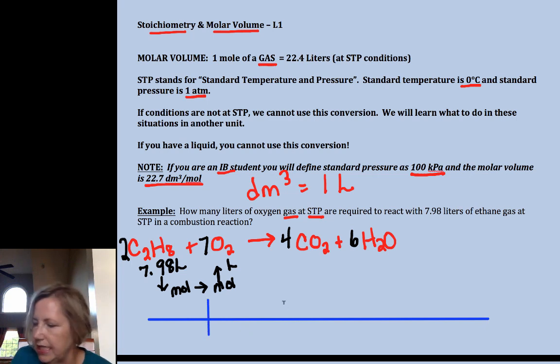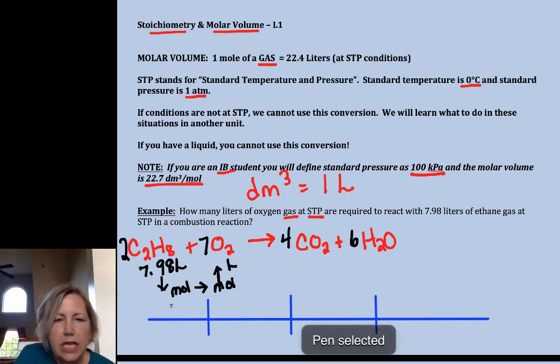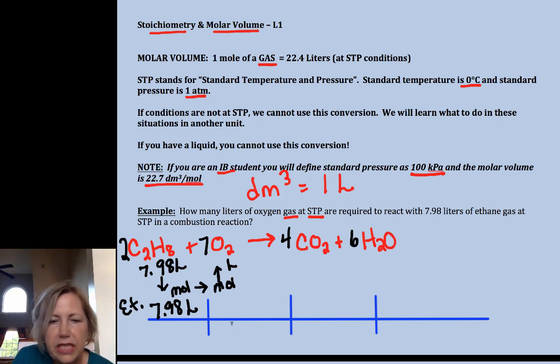We're going to need three steps. One, two, three. Watch your arrows. I'm going to start with 7.98 liters of my ethane. You want to label these. I want to go to moles, I want to get to moles of ethane from liters. Since it's a gas at STP, 22.4 liters per one mole of the ethane.